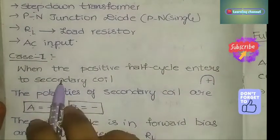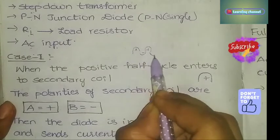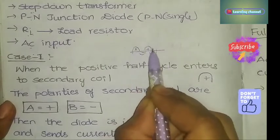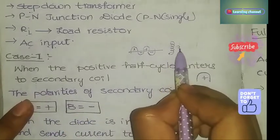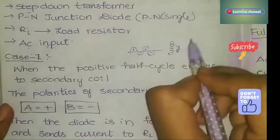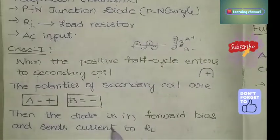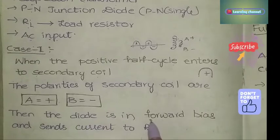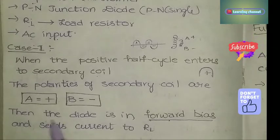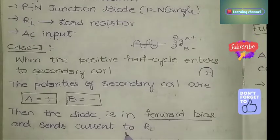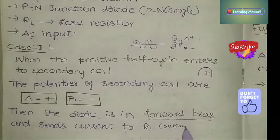Working — Case 1: When positive half cycles enter the secondary coil, the polarities are such that terminal A is positive and terminal B is negative. At this time, the diode is in forward bias. Since it is in forward bias, current is sent through the circuit to the load resistance RL, and output is obtained.